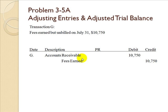In Transaction G, fees earned but unbilled at July 31st is $10,750. This indicates you need to bill customers for work already completed. We debit accounts receivable $10,750 and credit fees earned $10,750. Fees earned is the revenue account for this transaction, and this entry is used when billing a customer and accruing revenue.